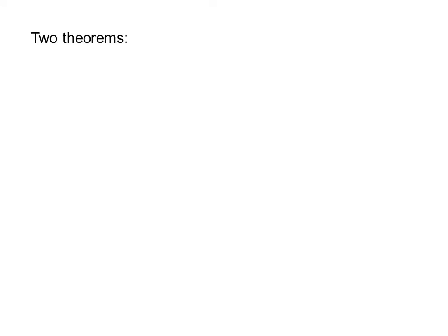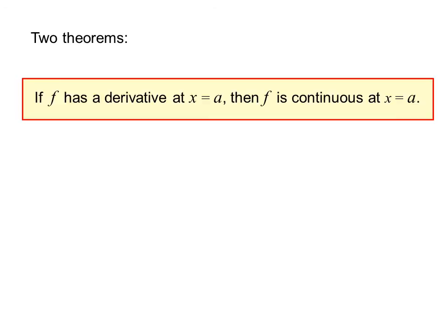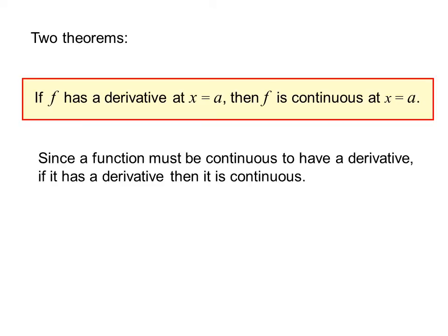Two theorems: If f has a derivative at x = a, then f is continuous at x = a. Since the function must be continuous to have a derivative, if it has a derivative, then it is continuous.